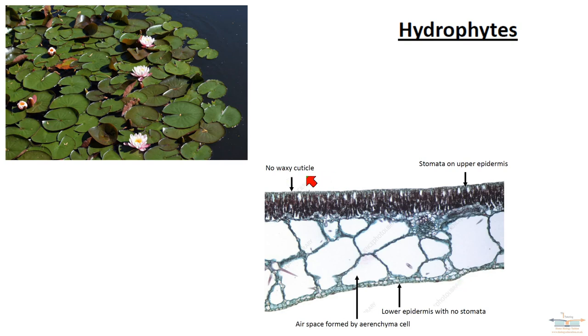There's no waxy cuticle because it doesn't matter really how much water these plants lose, because they live in water. So they have a very, very ample supply of water.